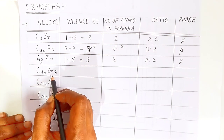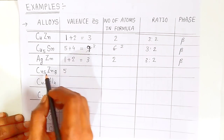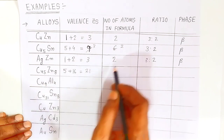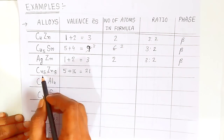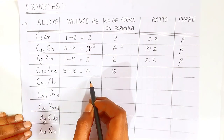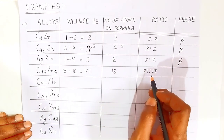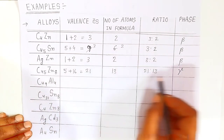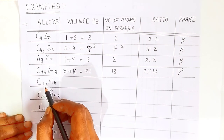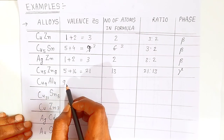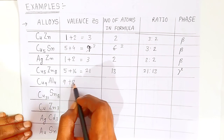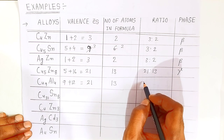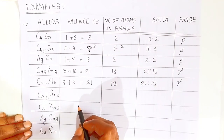Now copper-zinc alloy with different atom counts: valence electrons for copper give 5, and zinc gives 8×2=16, total 21. Number of atoms: 5 copper and 8 zinc, total 13. Ratio is 21/13 — this is gamma phase, which is cubic phase. Similarly, copper-aluminum alloy: copper gives 9 valence electrons, aluminum gives 4×3=12, total 21; atoms 9+4=13; ratio 21/13 — gamma phase.